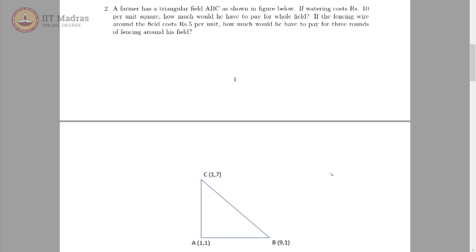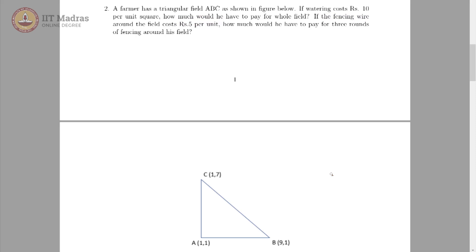In the second question, there is a triangular field ABC whose coordinates are given. If watering costs rupees 10 per unit square, that is area, how much would you have to pay for the whole field? Also, if the fencing wire around the field costs rupees 5 per unit, how much would he have to pay for 3 rounds of fencing around his field? So, find the area and perimeter of this particular field.